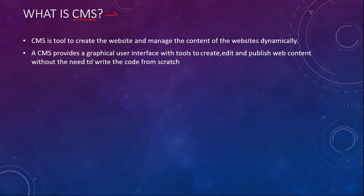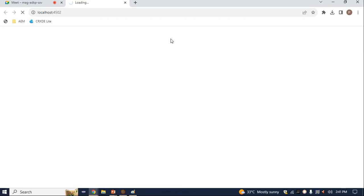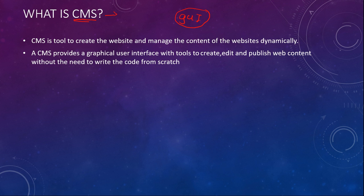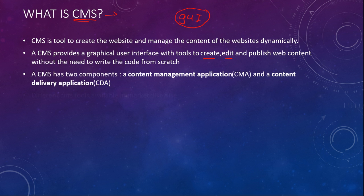Why do we use CMS? Because for creating a website we have to write code. But when you are using a CMS, they have provided a GUI — that means a Graphical User Interface. Based on this GUI you will create a website. You can create, edit, and publish the website content without writing any code.